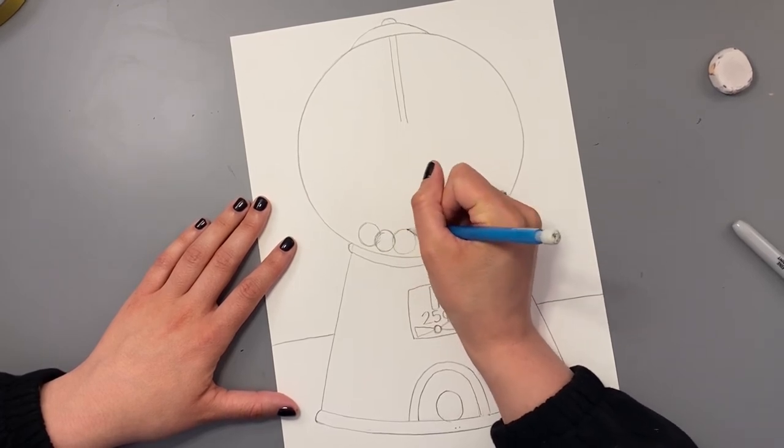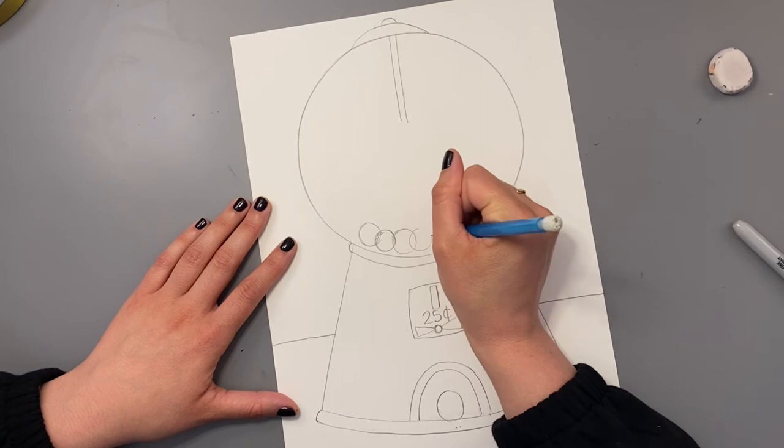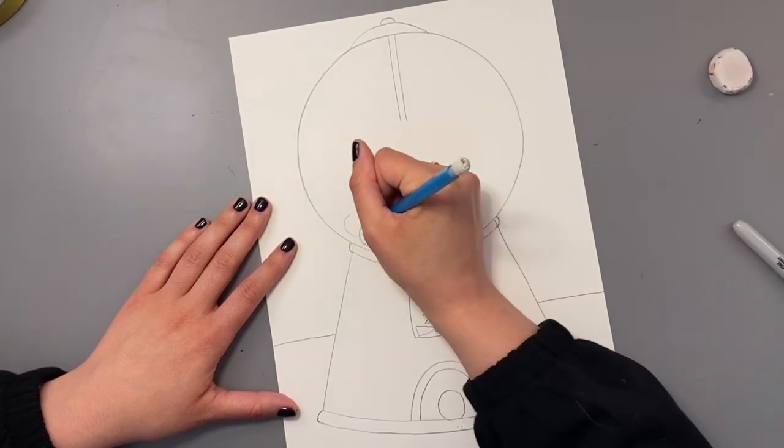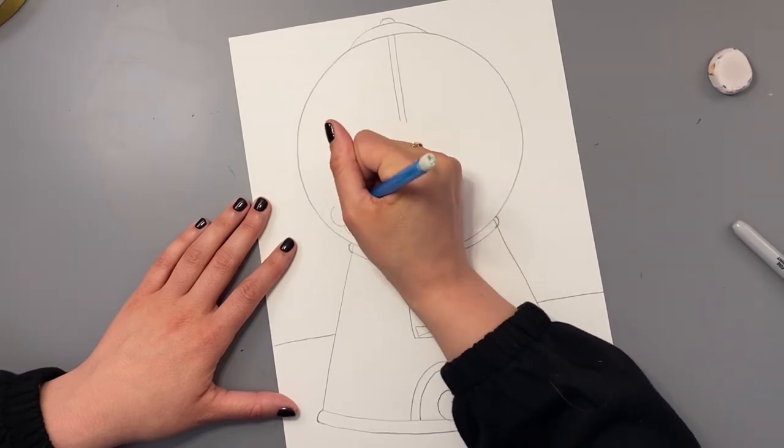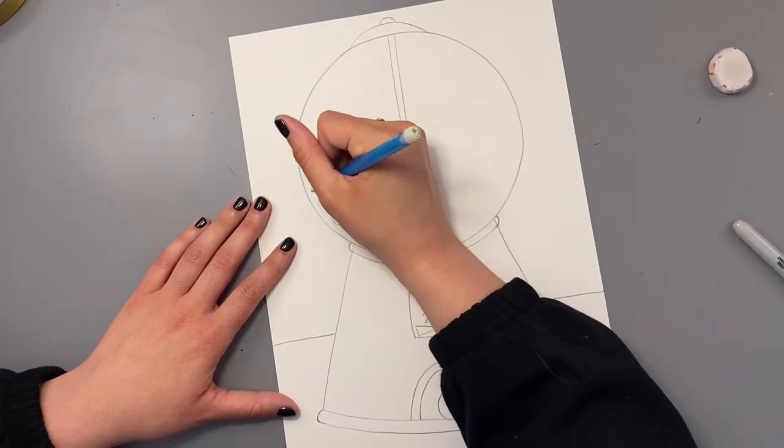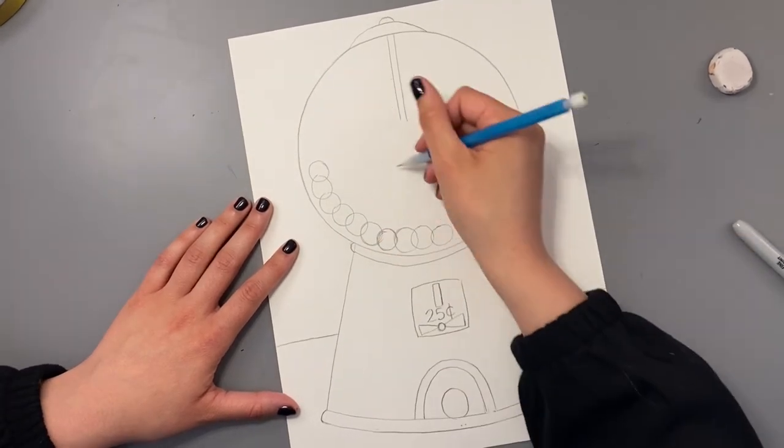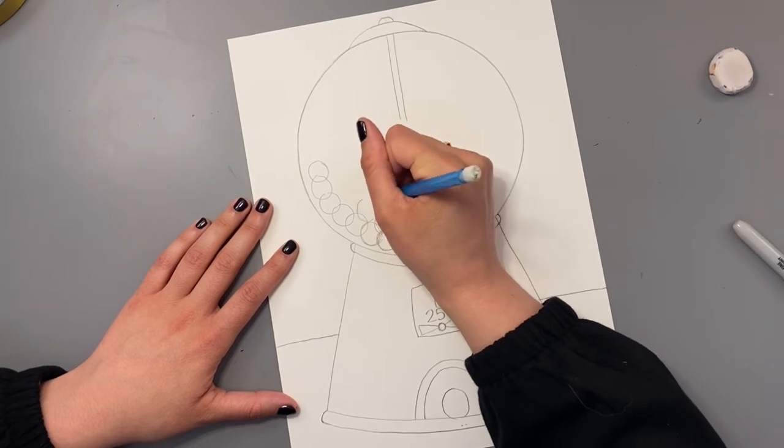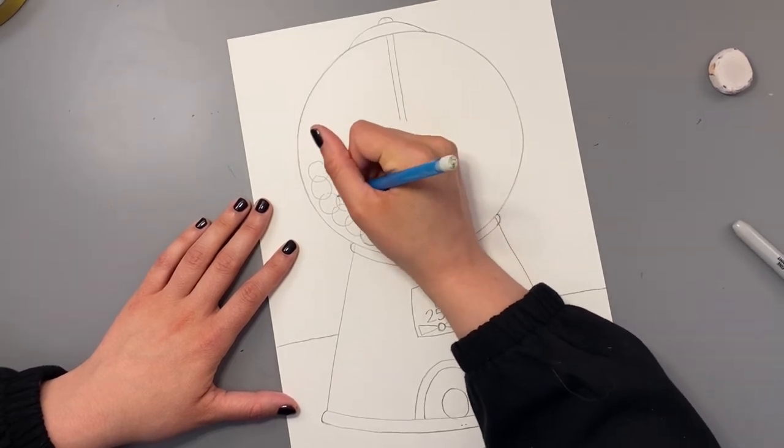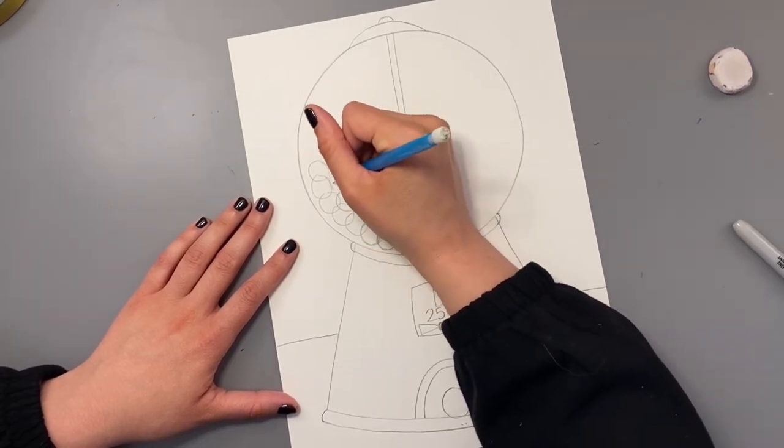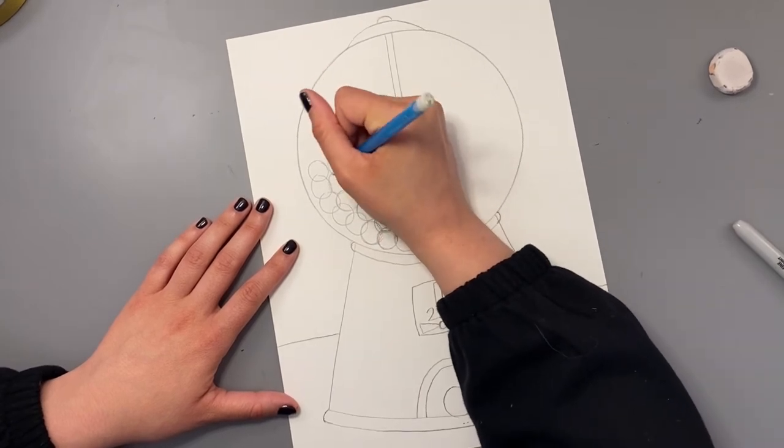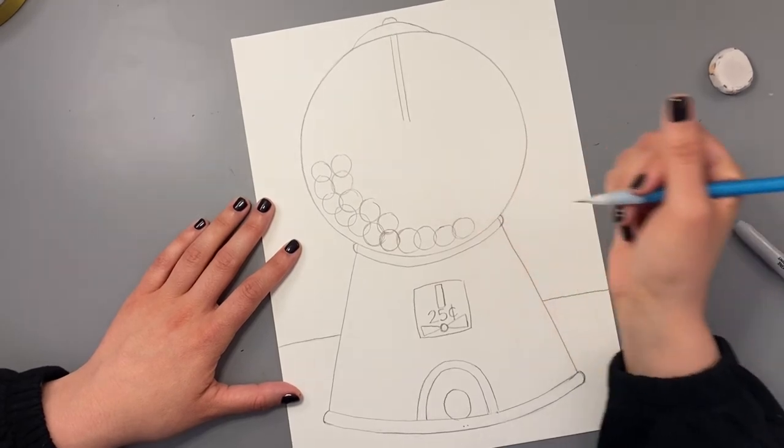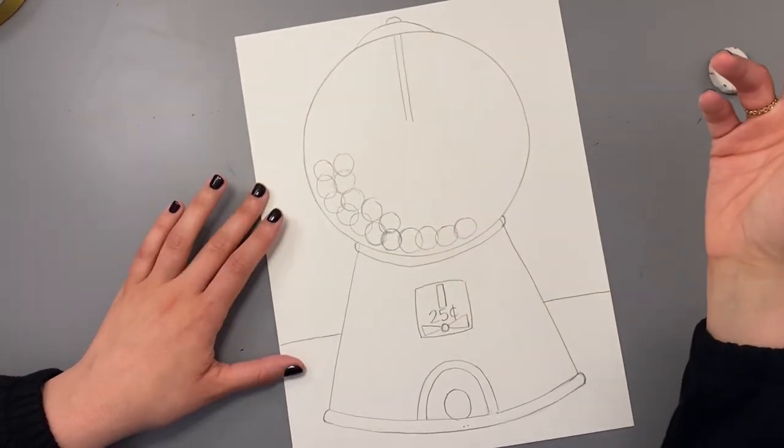And then when I outline it later, I can decide what lines I need and which lines I will erase. So I'm just going to continue drawing these circles until I reach about halfway up. And I'm also going to fill in the center. So you can just keep on overlapping them. Remember, you will outline the lines that you need later and erase the ones that you don't. And if you want to fill yours up all the way, go for it.